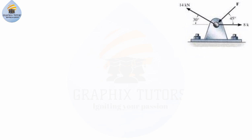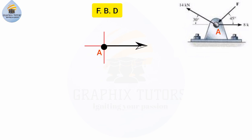The first thing you should do when you come across questions like this is to draw out your free body diagram. I will use red lines to represent my vertical and horizontal axes. This is the center point — I'll call it point A, same as this point here. The 8 kilonewtons is acting horizontally, placed from point A outward, and force F is acting inward at an angle of 45 degrees.